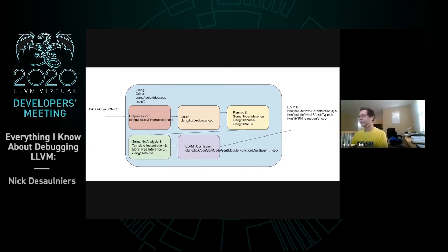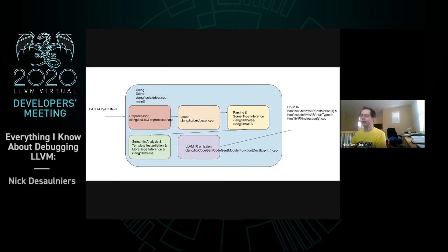A lot of these implementations are under clang/lib, and headers will be under clang/include/clang with matching source file layout. When generating instructions, the LLVM IR in-memory representation starts with the notion of a module — roughly a translation unit, though things get fuzzy with LTO where your whole program becomes like a module.